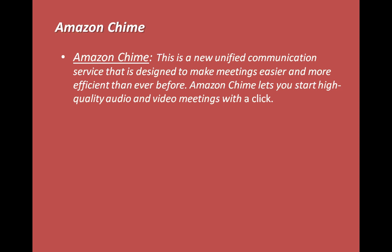Amazon Chime is basically a new unified communication service that is designed to make meetings easier and more efficient than before. Amazon launched this service because earlier tools being used by organizations had a lot of issues — employees felt frustration while connecting to meetings, sometimes not able to connect, sometimes throwing errors that the meeting ID is not valid.